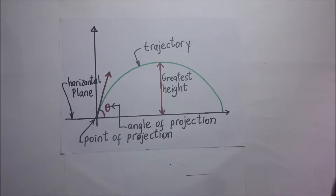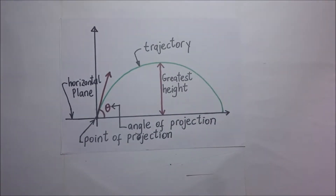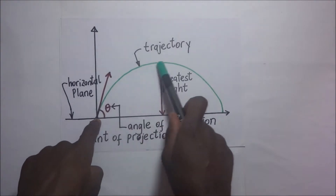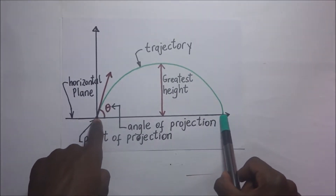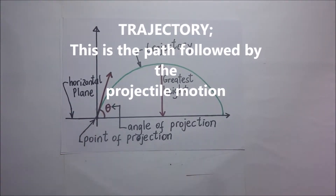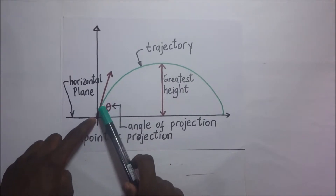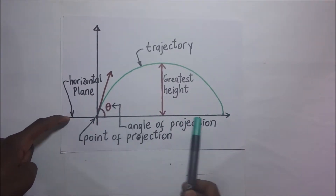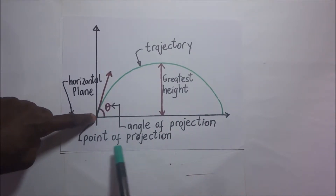Here is an illustration of projectile motion. The path shown in green demonstrates the projectile motion, and the path taken by the projectile is what we call a trajectory. A trajectory is simply the path followed by the projectile. This motion always happens at a certain angle to the horizontal, and the horizontal passes through what we call the point of projection — which is where the trajectory starts from.